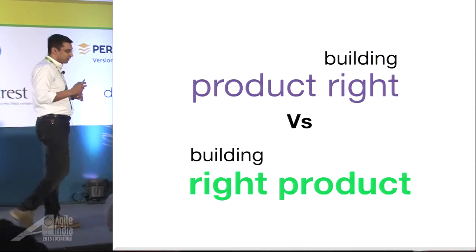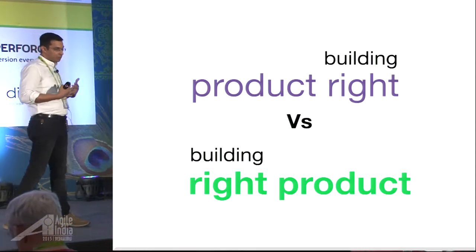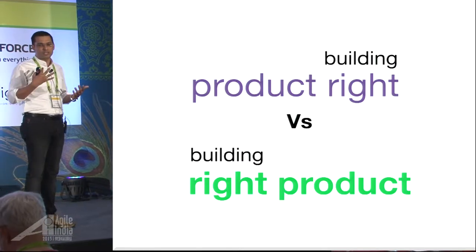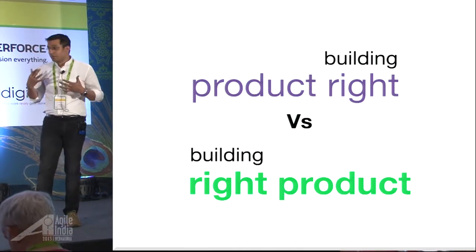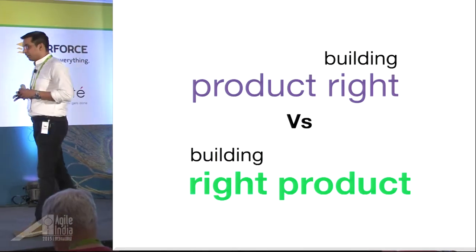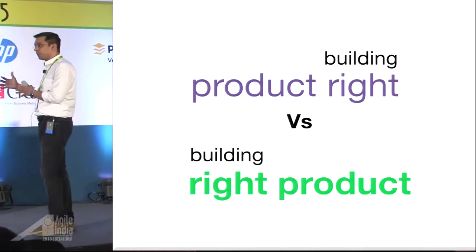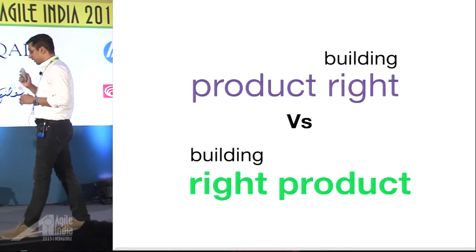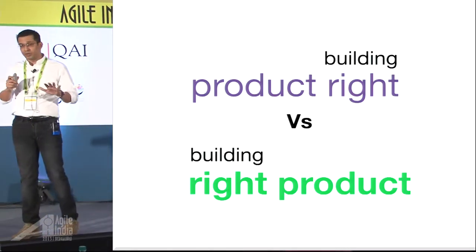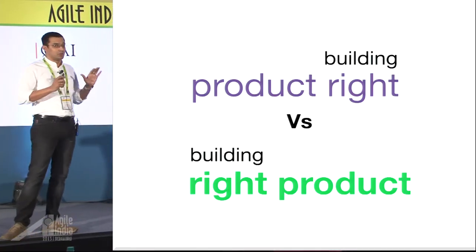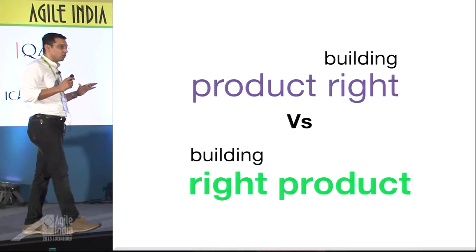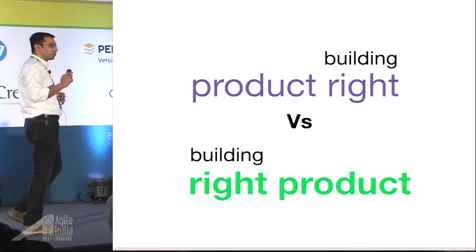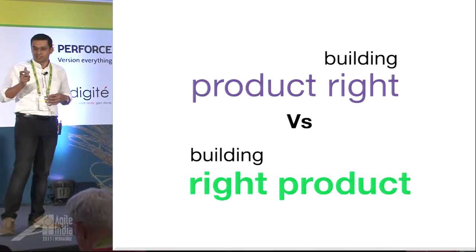When we go for adopting agile practices, most of the time our focus is more around building the product right. We try to ensure that all of our quality and everything should be perfect. But we cannot lose our focus from the main goal, which is building the right product — the product which is going to get used or is going to serve some business need.